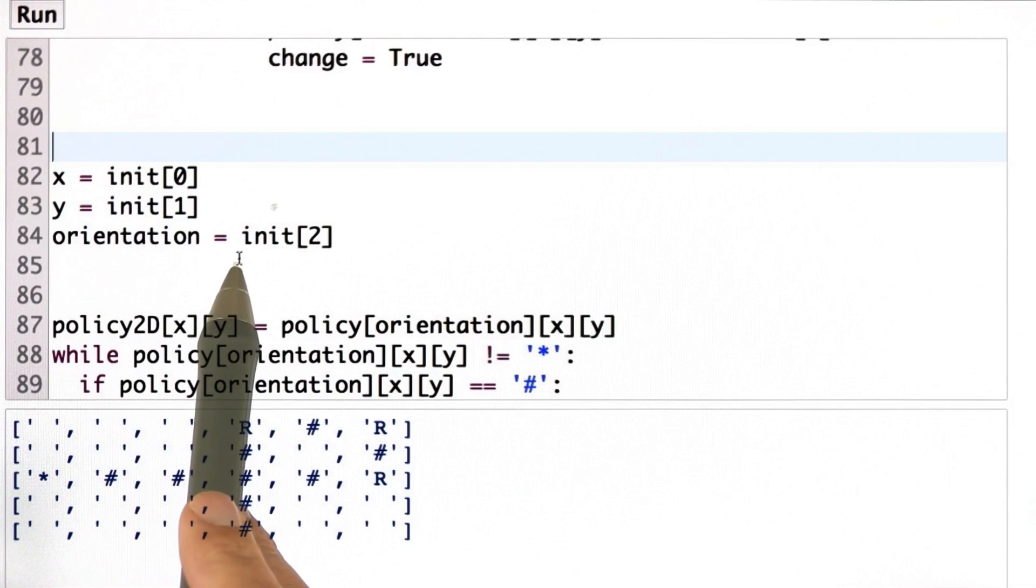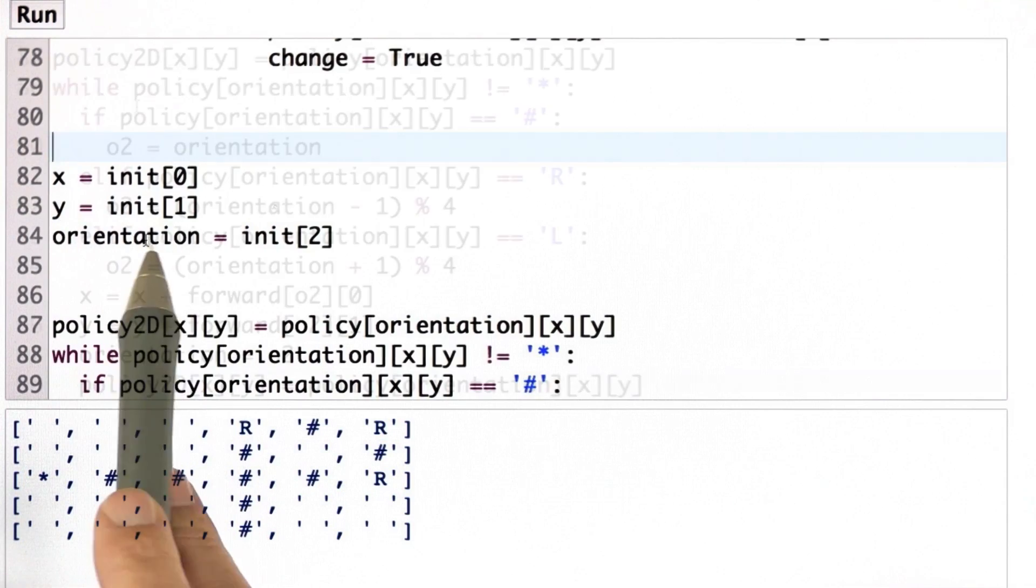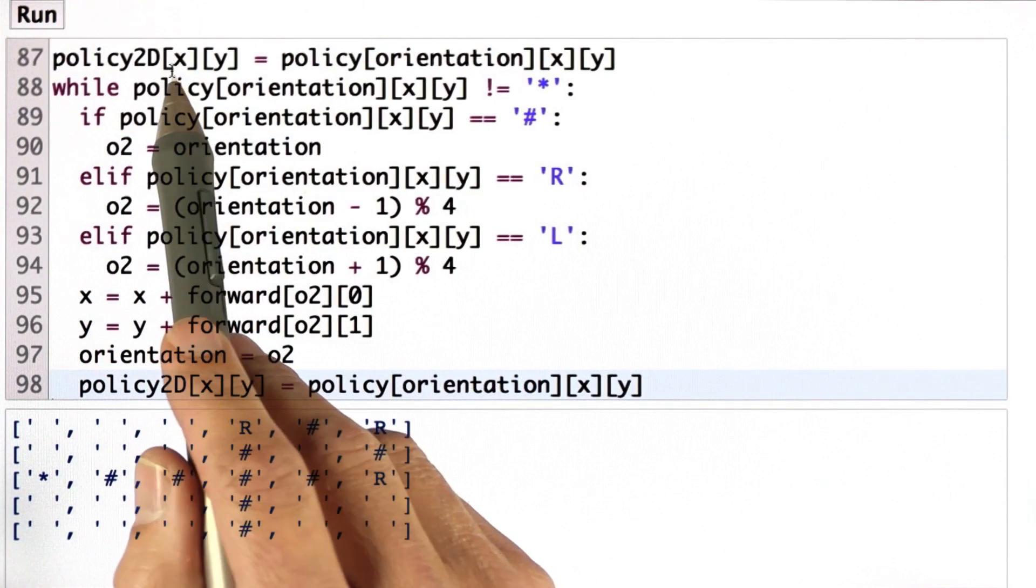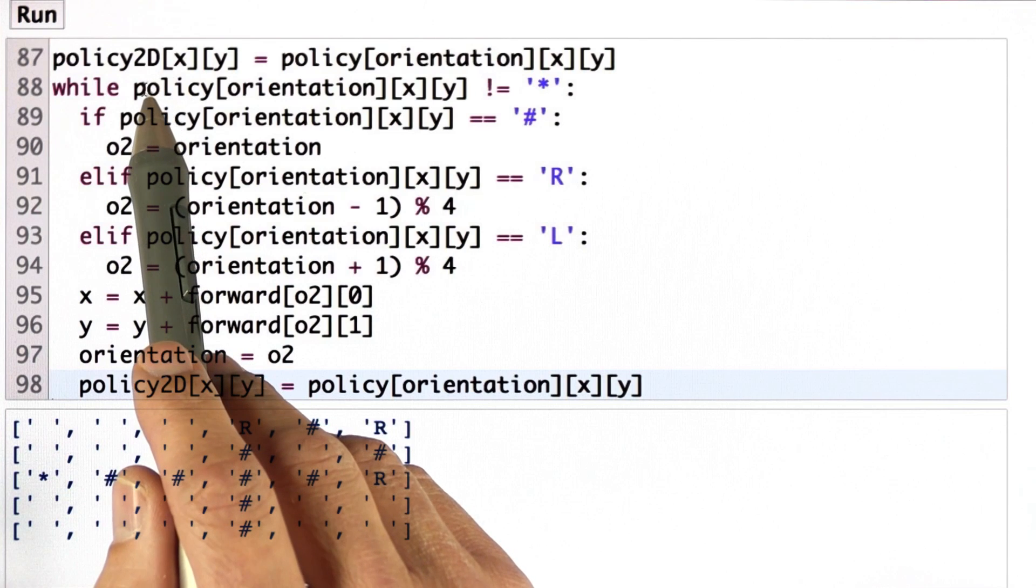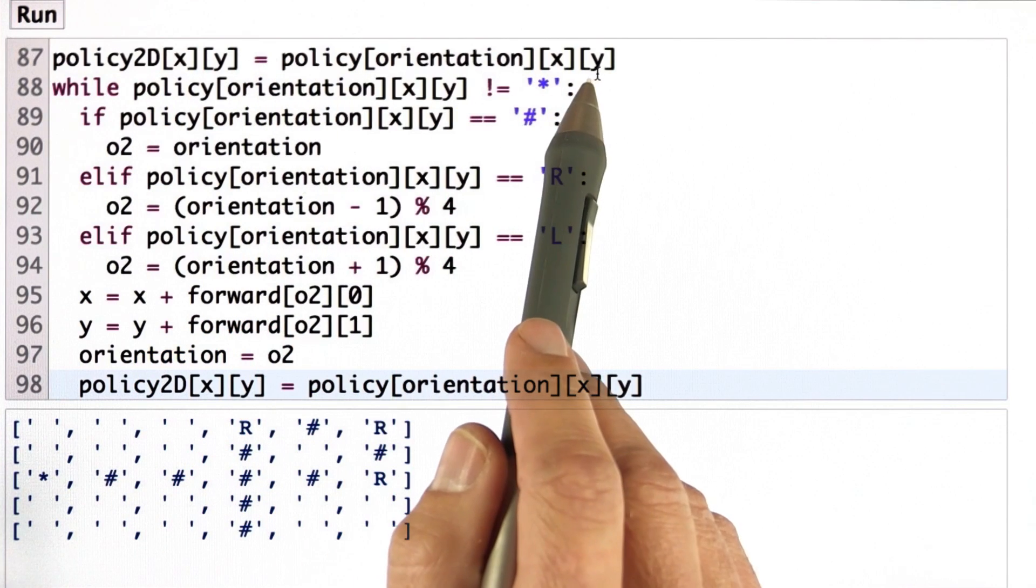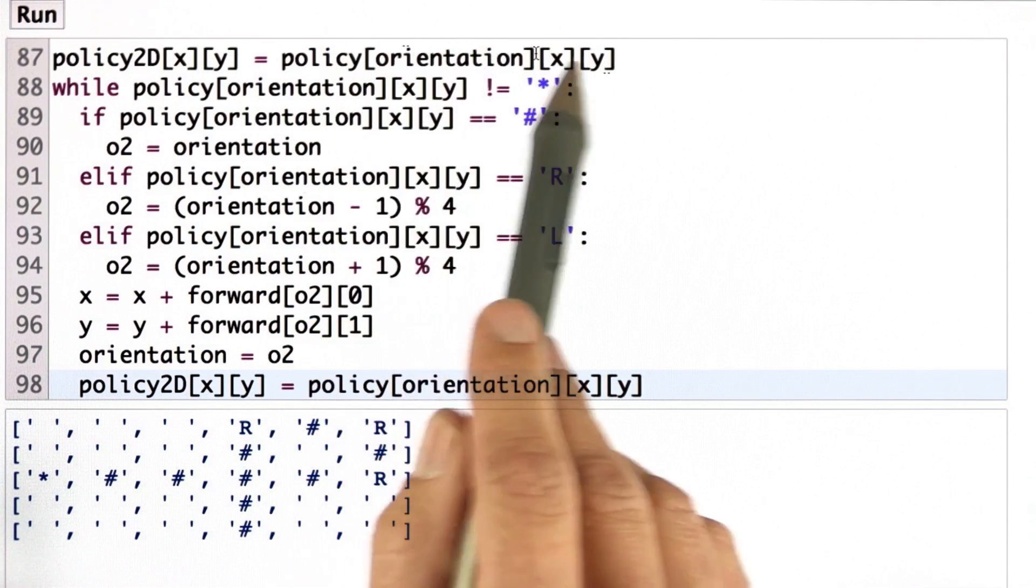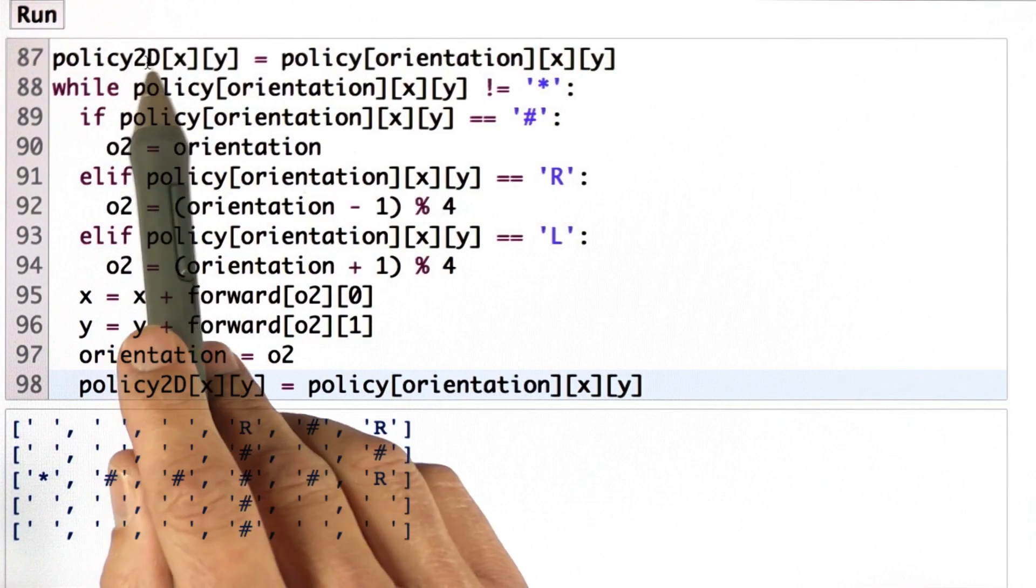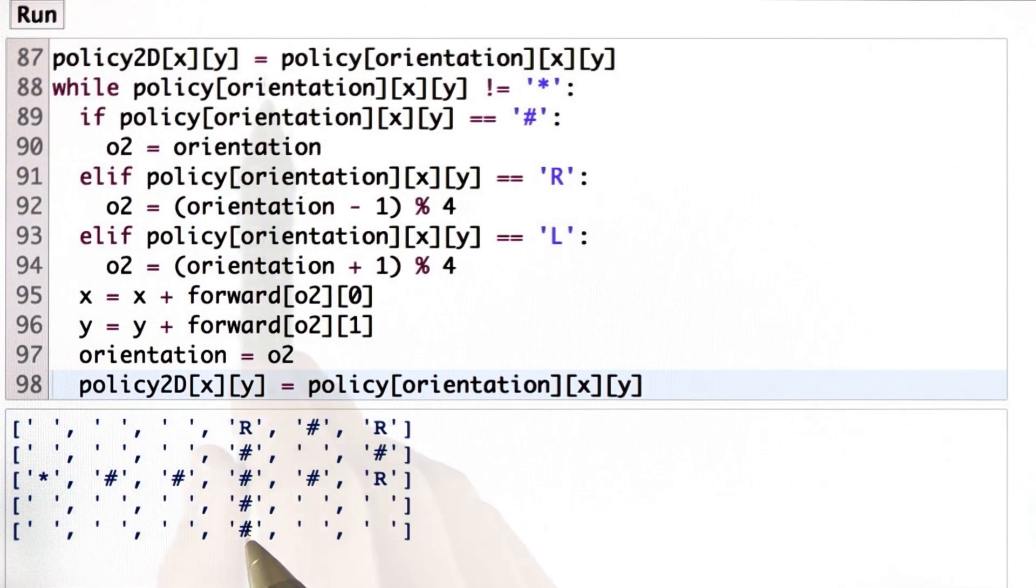So let me set the initial state to be x, y, and orientation. And all I do now is run the policy. So for the very first state, I copy over the policy from the three-dimensional table into the two-dimensional one, which will be this hash mark over here.